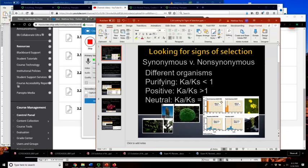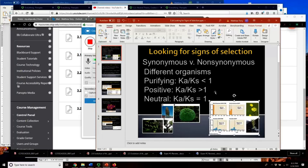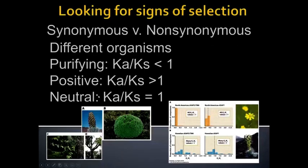Let's talk about what types of genes we'd expect to see exhibiting these different signs of selection. Starting with neutral — the easiest one — there's no sign of selection. A neutrally evolving protein is not an important protein. Very few proteins evolve completely neutrally over their entire length because proteins usually serve a function. A neutrally evolving protein will eventually be lost as more and more mutations build up until it's completely non-functional.